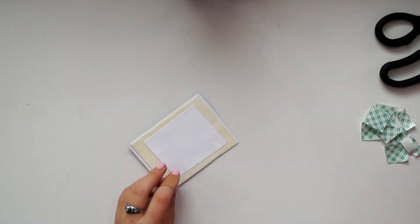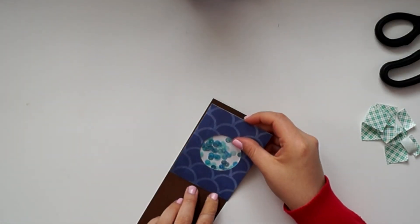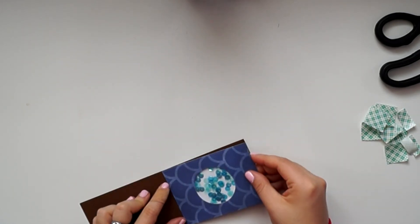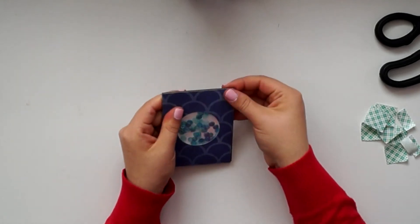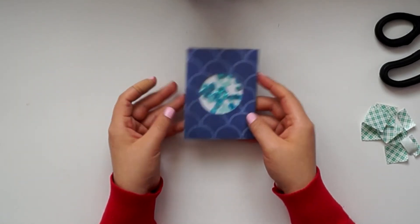So that we can now shake our sequins inside. Once that's done, we can now actually adhere the front panel of our shaker card to the actual cardstock. There you have it, a simple and easy way on how to make a shaker card, and now you can put any design that you'd like.